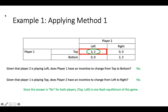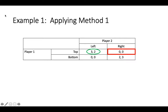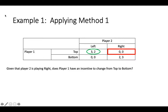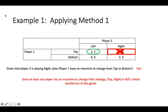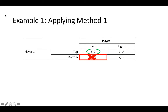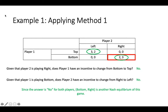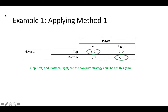However, this does not mean that we are finished. We have three more outcomes to examine. Let's consider the outcome top right. Given that player two is playing right, does player one have an incentive to change from top to bottom? Clearly the answer is yes — player one should switch from top to bottom. Since we answered yes for player one, we can rule out top right as a possible Nash Equilibrium. By the same logic, we can rule out bottom left. Finally, looking at bottom right, we see that it is also a Nash Equilibrium of this game. Therefore, this game has two pure strategy Nash Equilibria: top left and bottom right.